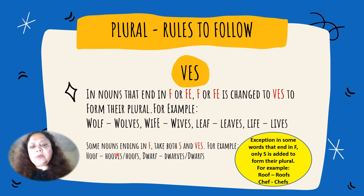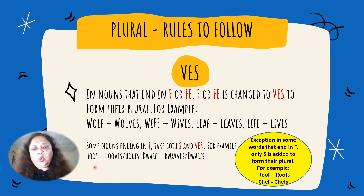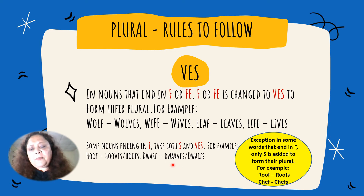Some nouns ending in F take both S and VES, meaning we can spell it with both S and VES. For example: hoof — hoofs and hooves, both spellings are accepted. Dwarf — dwarfs and dwarves, both spellings are accepted.